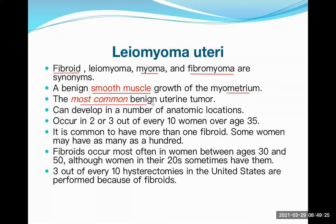This is the most common benign tumor of the uterus and is common during the reproductive age group, roughly 15 to 45 years. It can develop in a number of anatomical locations — sometimes in the body of the uterus, sometimes in the fundus, and sometimes even in the cervix. It occurs in two or three out of every ten women over the age of 35.